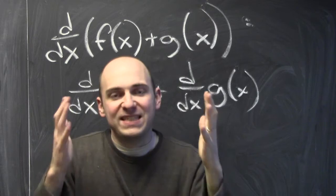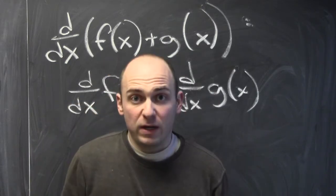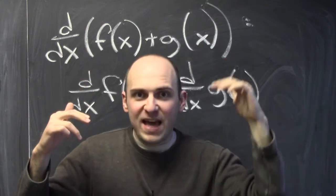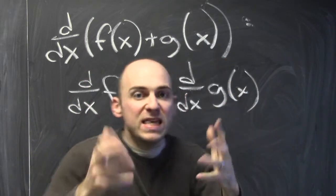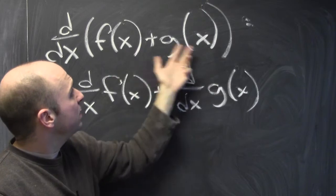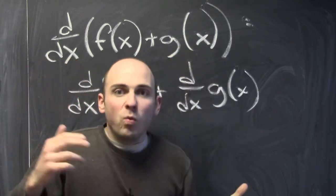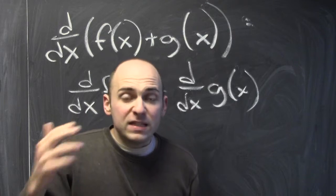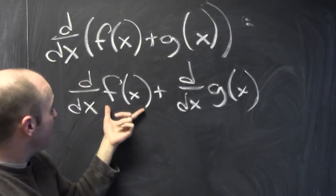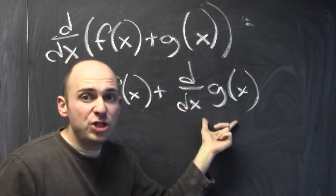Why does this make sense? Think back to what the derivative is measuring — it's measuring how changing the input affects the output. In this case, I want to know how changing x affects the sum of f(x) and g(x). Well, the sum is affected by the sum of the effects: the sum of the derivative of f and the derivative of g.